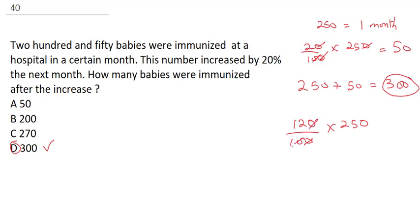The correct answer is 300, which is D. Another way to solve this is to add the increase: 120/100 times 250. Canceling these, 12 times 25 equals 300. Whichever way, you can get the correct answer.